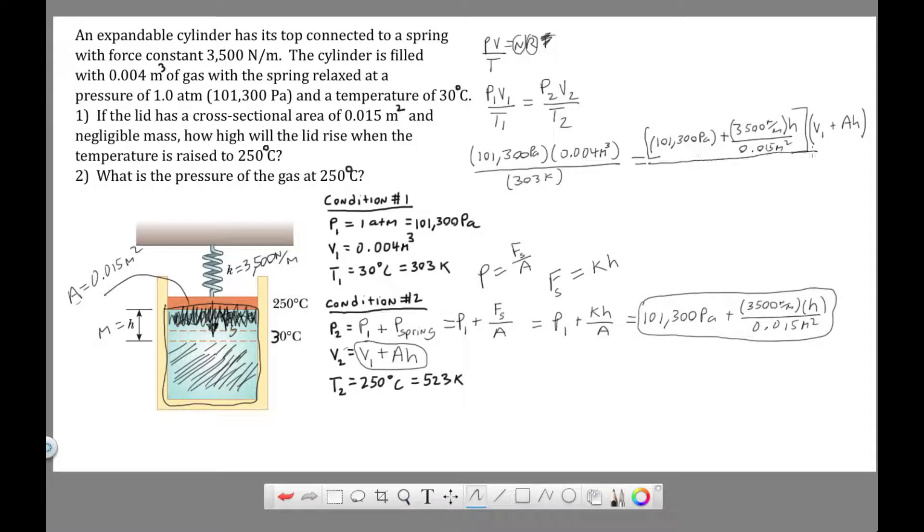As you can tell, the algebra is going to get a little bit tedious. This is definitely harder than what you would get on a multiple choice test. This would be more of a difficult free response problem. T2 is 523. So the basic setup is done. From here it's math. I'm going to clean this up so I get some room. I'm going to erase all this.